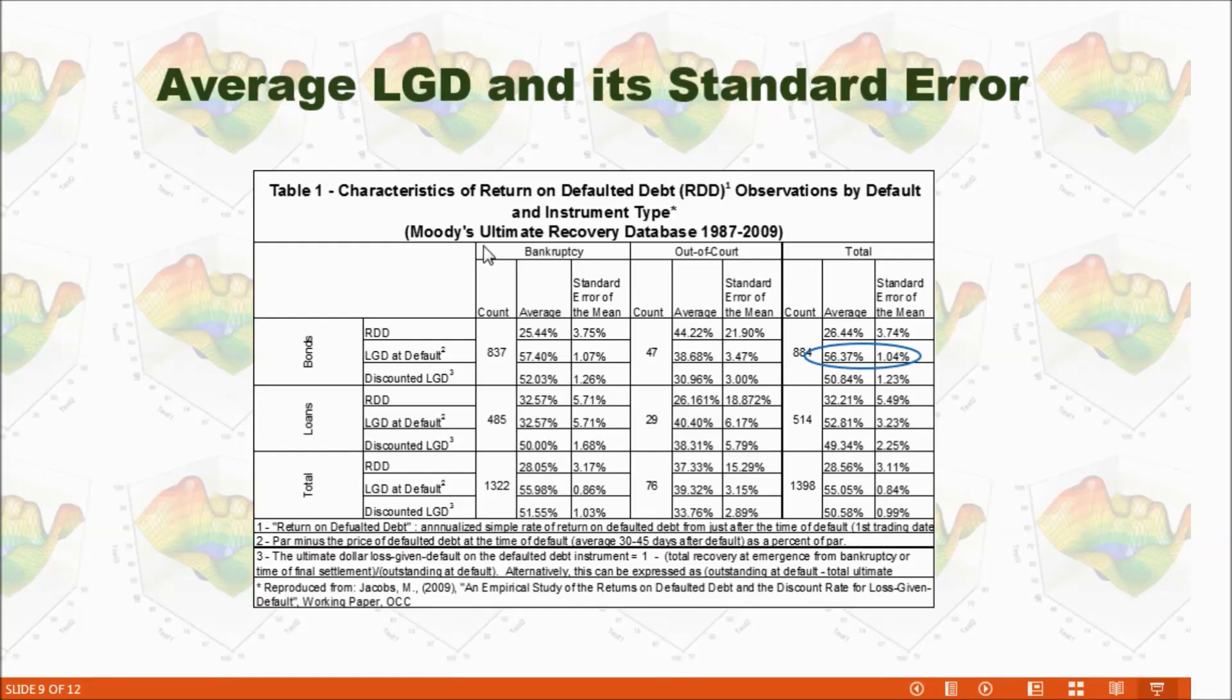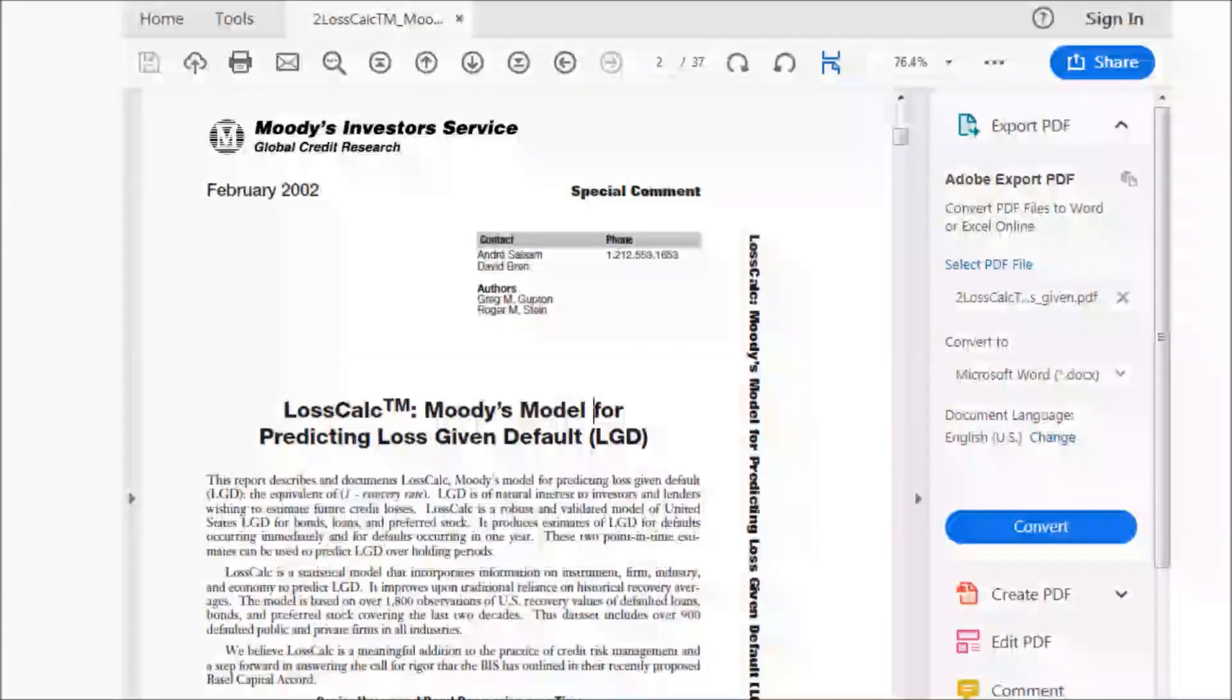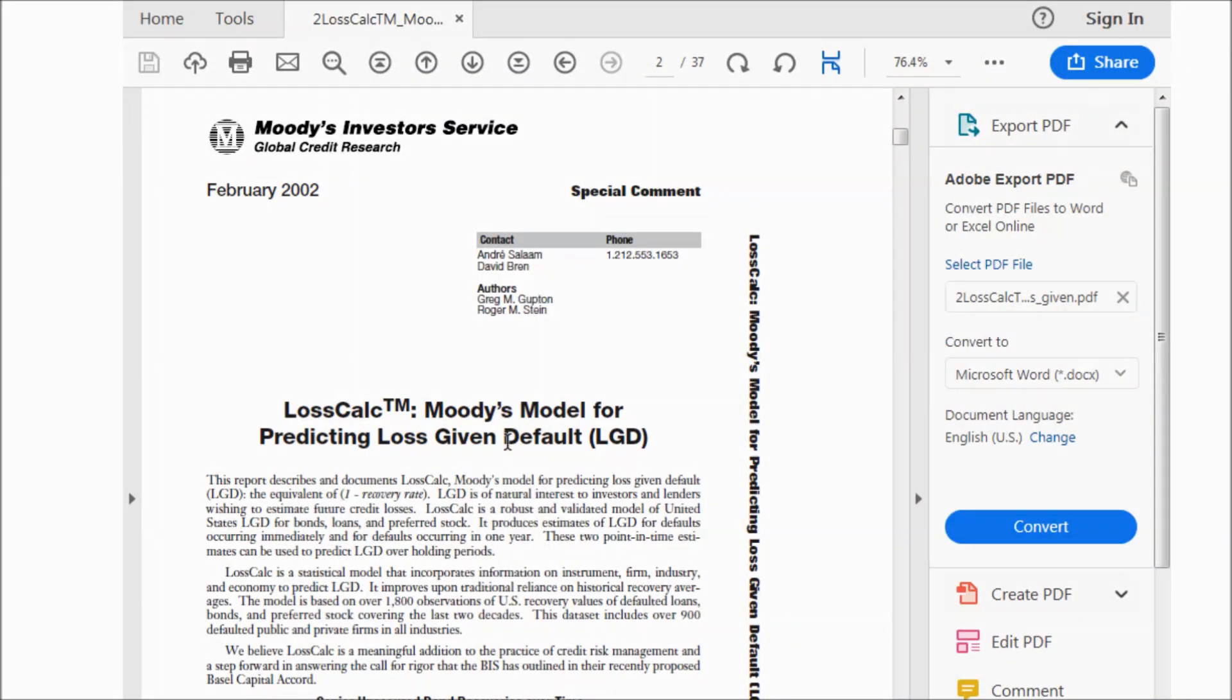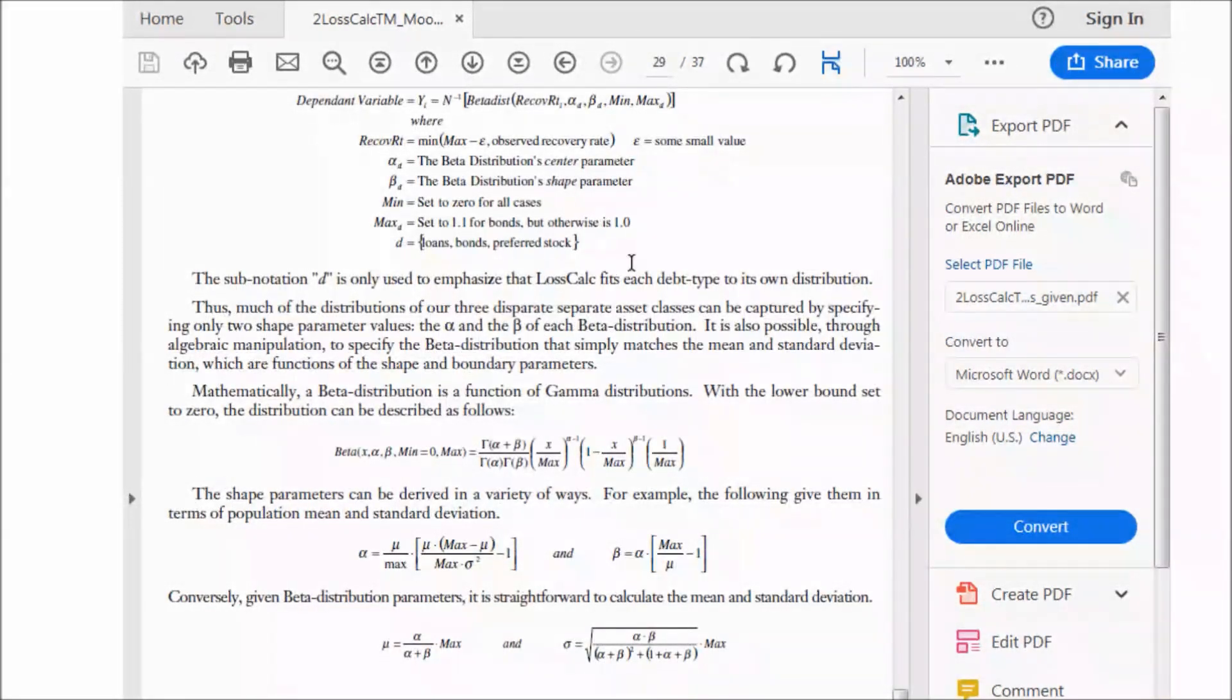According to Moody's ultimate recovery database, for the bond, the LGD at default on average is this 53% and also the standard error of mean is about 1%. I want to use this number to construct this beta distribution.